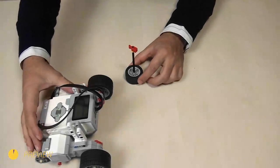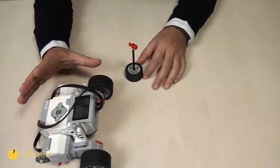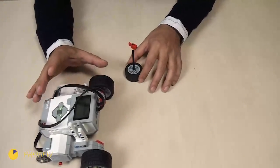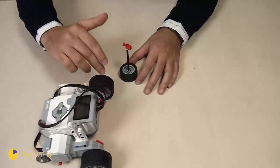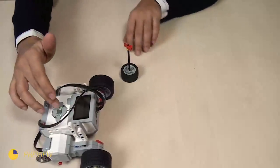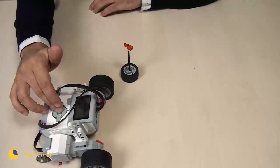There is a block in the EV3 software called the tank block and in this video we will use it. Why? Because this block allows us to control the power of the different motors and at the end the robot will work like this.